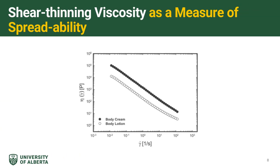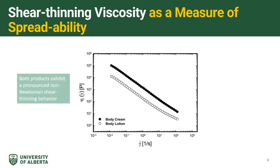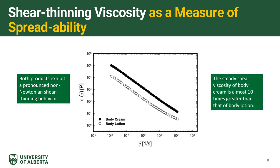Shear thinning viscosity as a measure of spreadability. The figure shows the shear rate dependence of steady shear viscosity for body cream and body lotion at 35 degrees Celsius. While the Newtonian flow region is not observed at low shear rates, the steady shear viscosity of both products sharply decreases with an increase in shear rate over the whole range tested. These two products exhibit a pronounced non-Newtonian shear thinning behavior, and the steady shear viscosity of body cream is almost 10 times greater than that of body lotion.